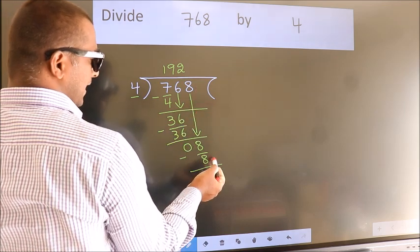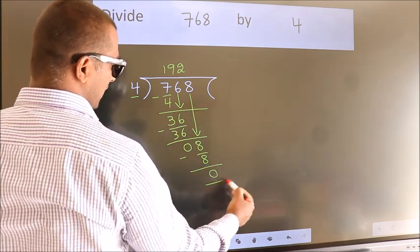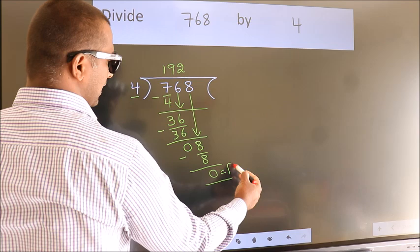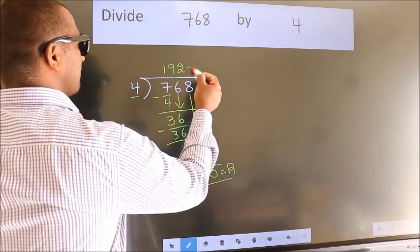No more numbers to bring it down. So we stop here. This is our remainder. This is our quotient.